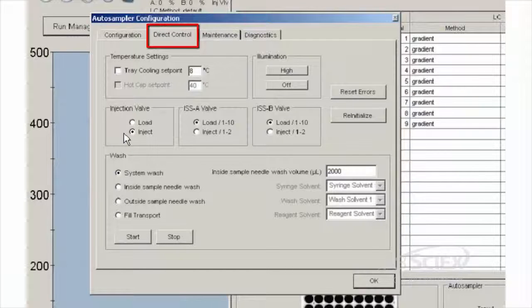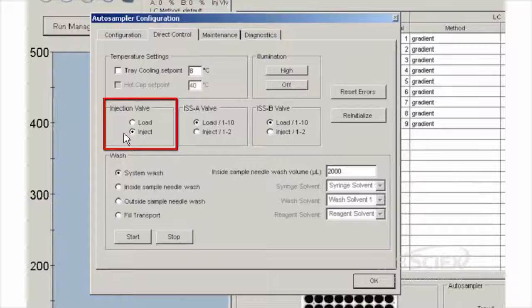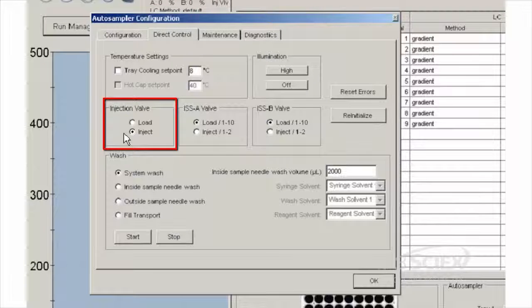Using the Auto Sampler Configuration window, click the Direct Control tab, Injection Valve Group, and switch the valve position between inject and load ten times to set the valve stops.